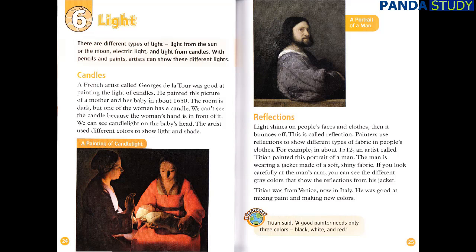Chapter 6: Light. There are different types of light — light from the sun or the moon, electric light, and light from candles. With pencils and paints, artists can show these different lights. Candles. A French artist called Georges de La Tour was good at painting the light of candles. He painted this picture of a mother and her baby in about 1650. The room is dark, but one of the women has a candle. We can't see the candle because the woman's hand is in front of it. We can see candlelight on the baby's head. The artist used different colors to show light and shade.